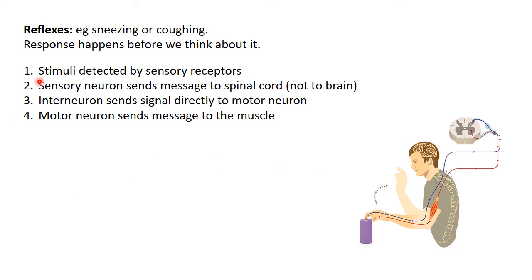The four steps are similar to before. First, a stimulus is detected — here the pain receptors in our fingertips detect that we're getting burnt. The sensory receptors send a signal up the sensory nerve, which is the blue one being traced here. That signal travels up to the spine — this picture shows a cross-section of the spine. The message hasn't gone all the way to the brain; it's only reached about the base of the neck, just within the spine.